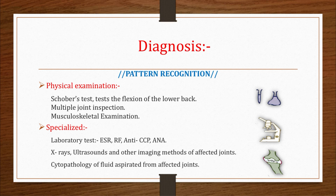Diagnosis of rheumatic disease cannot be confirmed with a single test. It is all about pattern recognition. Based on the pattern of joint involvement, presence of inflammation, and duration of disease, rheumatic disease is categorized as symmetric or asymmetric, inflammatory or non-inflammatory, and acute or chronic. If this pattern matches with the patient's history, physical examination, lab testing, and imaging studies, then a diagnosis can be made.